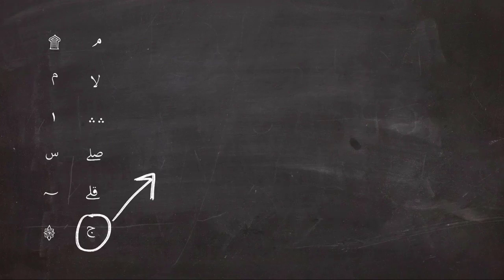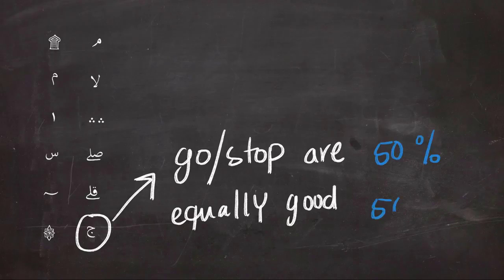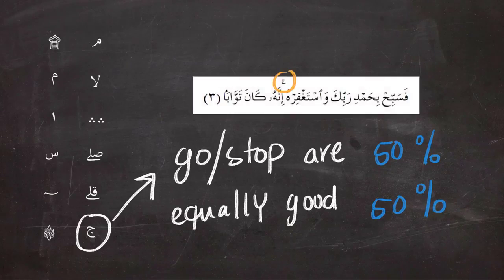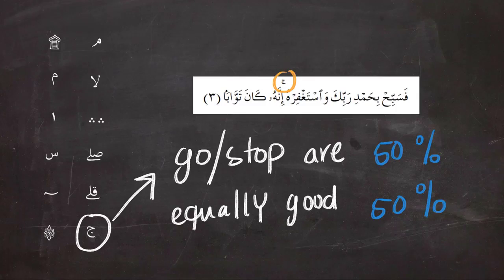Next is the sign of Jeem, which gives you a 50-50 percentage of going or stopping—they're equally the same. You can stop at the sign of Jeem like in the example, or you could just keep reading and it would be equally good.